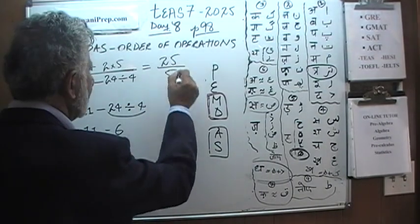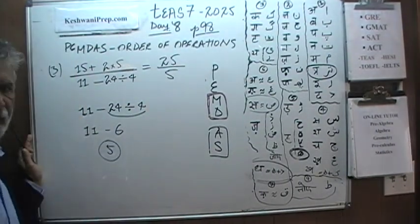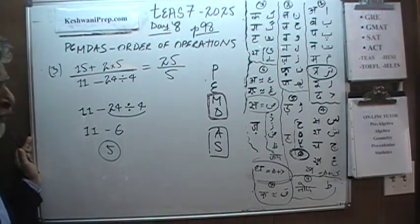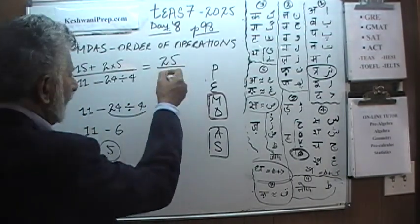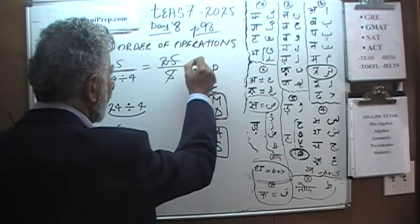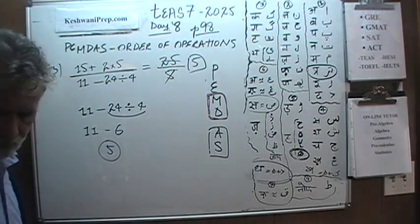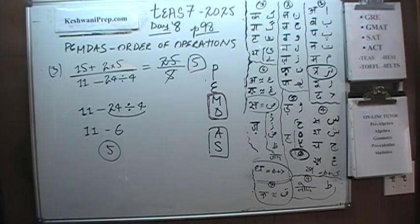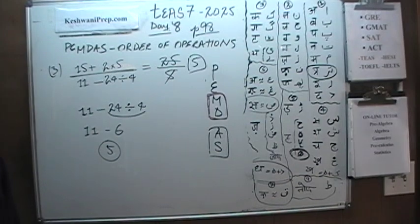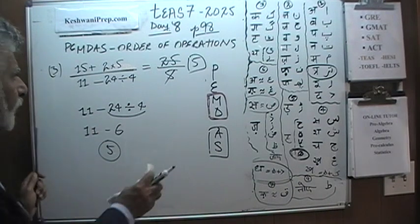As you can see, it's now a straightforward fraction. 25 divided by 5 gives us a grand total of 5. That is the answer — answer number 3 is 5. Let's take a look at number 4.